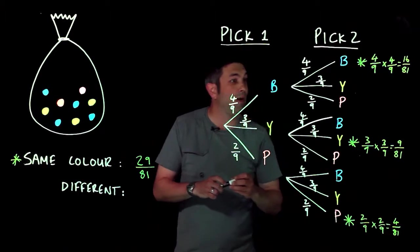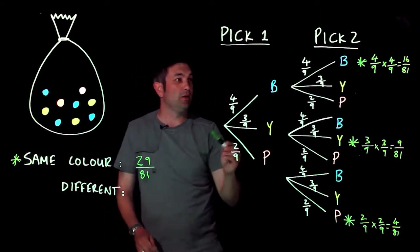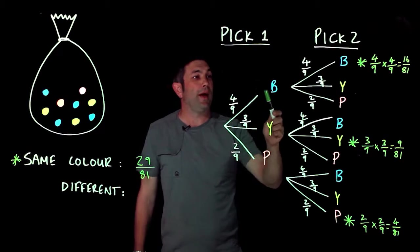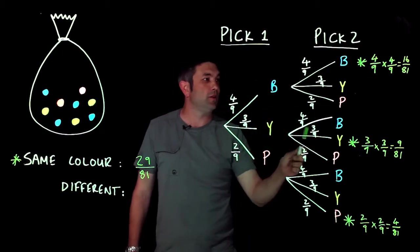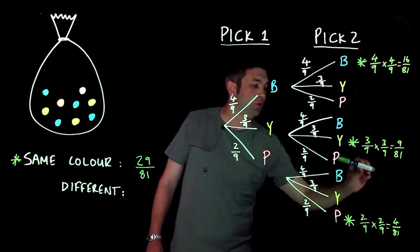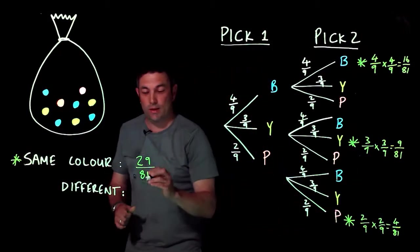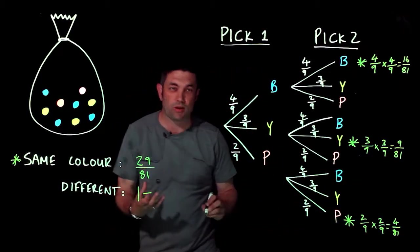Now the thing about finding two different colors is it's anything other than the two same colors, isn't it? So it's all the other options. Now all that means is I know that it's certain that something's going to happen, and I know that certain in probability is one.